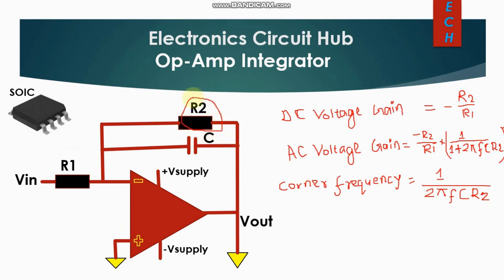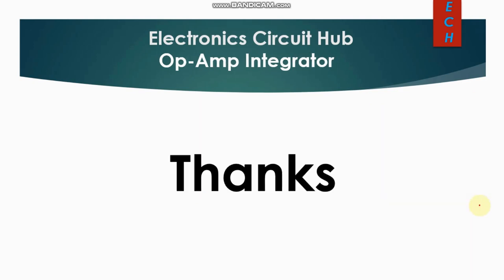R2 is used to improve the frequency response of the op-amp integrator circuit. The DC voltage gain = −R2 / R1, and the AC voltage gain = −(R2 / R1) × 1 / (1 + 2πfC × R2). The corner frequency is fc = 1 / (2π × R2 × C). Thanks for watching — feel free to ask questions in the comment section.